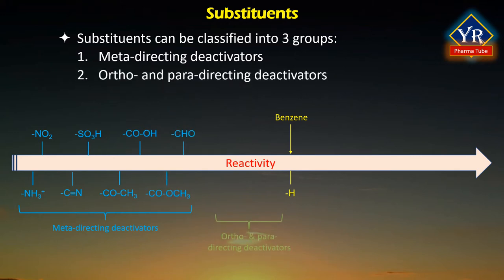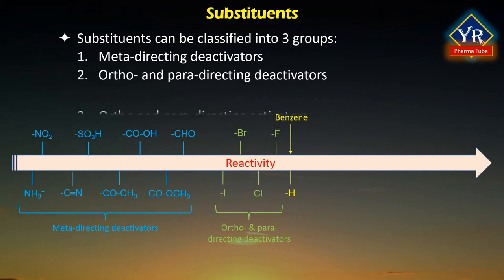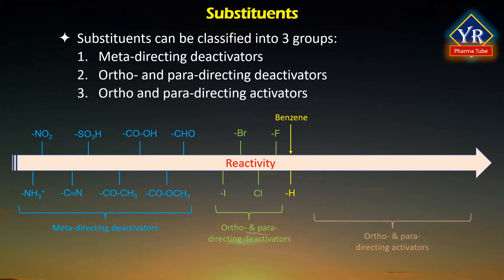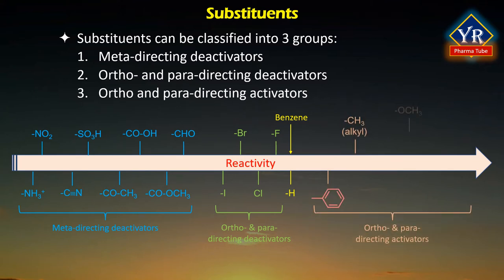Number 2: ortho and para-directing deactivators such as chloro, bromo, iodo, and fluoro groups. And number 3: ortho and para-directing activators such as benzyl, alkyl, methoxy, acetylamino, hydroxy, and amino groups. There are no meta-directing activators.